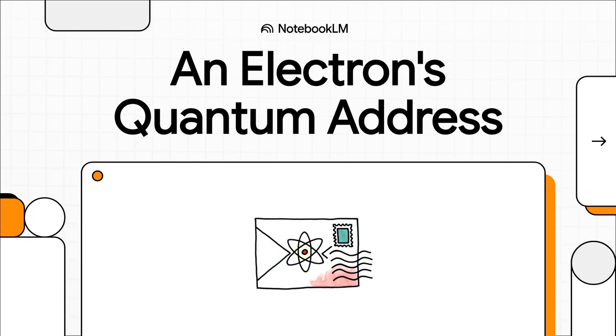All right, let's dive into something that is honestly one of the most beautiful and elegant systems in all of science: quantum numbers. You can think of it as this incredible, unique address that tells us exactly where an electron is and what it's doing inside an atom.